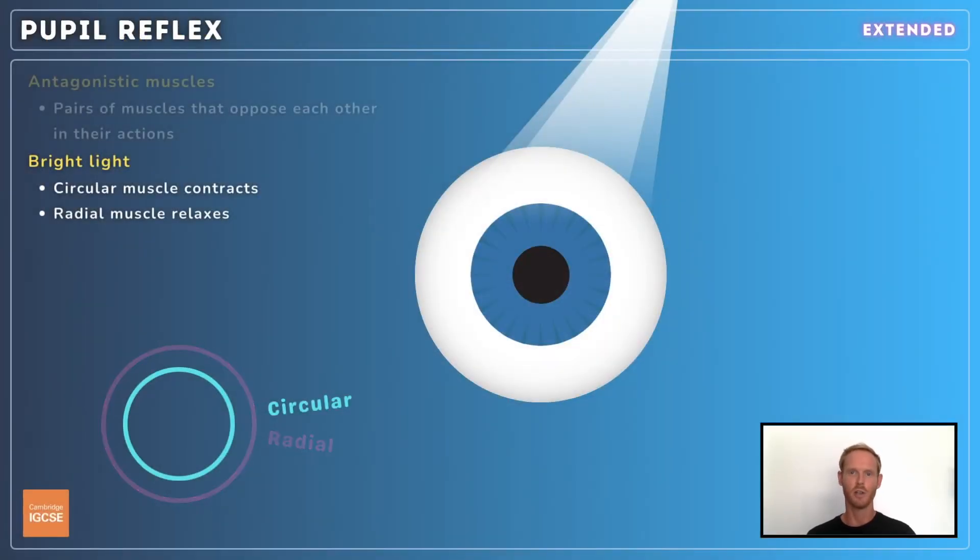When light intensity is high, the circular muscle contracts and the radial muscle relaxes. This constricts the pupil and reduces the intensity of light entering the eye.